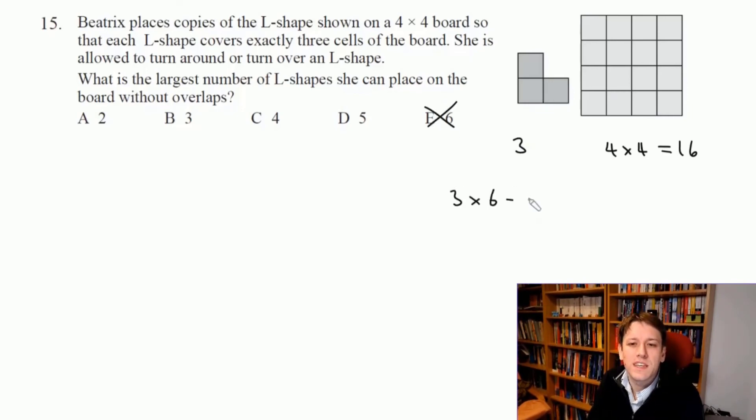So I'm never going to be able to get 6 on here, because 3 times 6 is 18. I would need two more squares if I wasn't going to have any overlapping. Now I'm just going to play around with them and see if I can make it work. If I can find a way of doing 5 we'll be done, otherwise I'll have to make a more complicated argument.